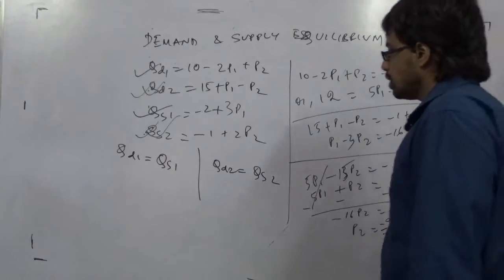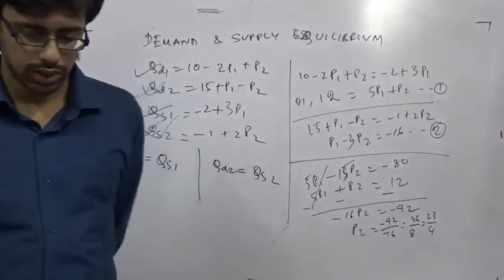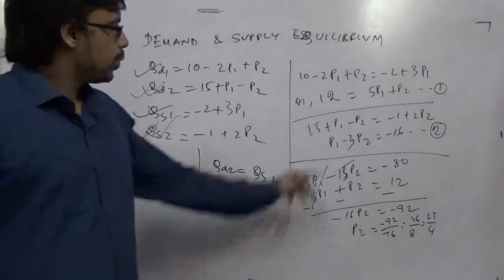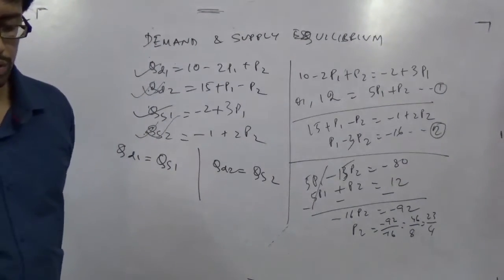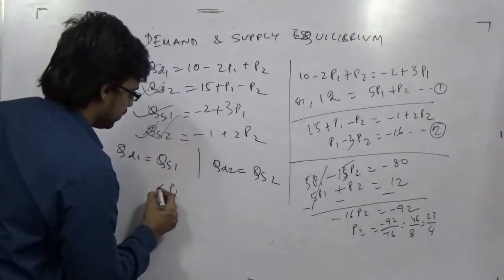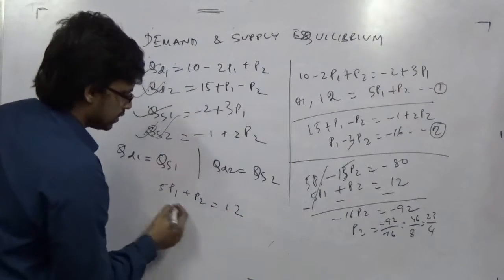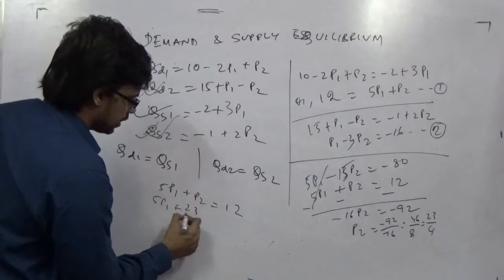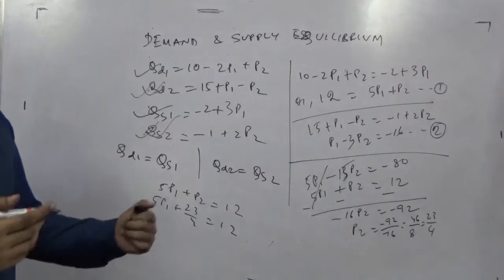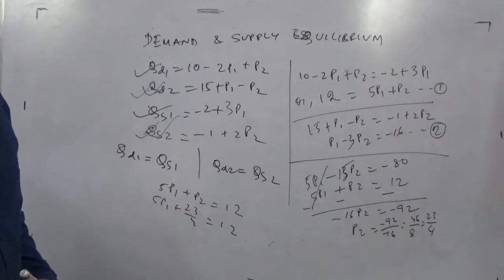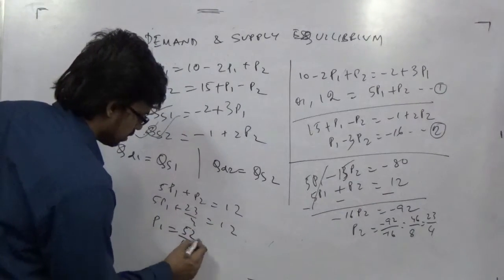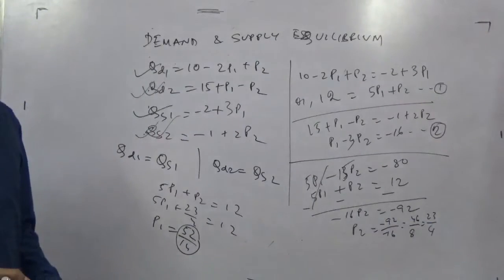You can put this in any equation and keep on finding the other values. For example, putting this in the equation, we can find out the value of p1. Solving, you can write the p1 value should be 15. 5p1 plus p2 equals 12. Putting this value in this pattern, like 23 by 4, you will get the value of p1. Then putting this p1 and p2, you will get qd1 and qs1. Putting this value p1 will get you like 52 by 14. And after putting these values in the format, you will get the other cylinders.